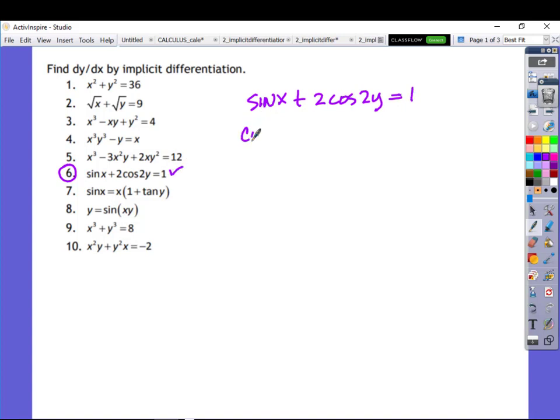The derivative of sine is cosine, so there's cosine x. And the derivative of this one, the 2, we don't need a product rule because it doesn't have a variable with it. So we just drag that right along. The derivative of cosine of 2y is going to be negative sine of this 2y, and then it times the derivative of the inside, which is going to be 2 dy dx. So all of that right there.